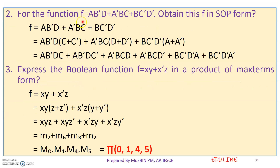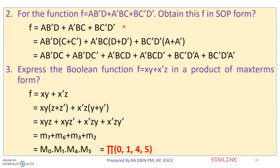We can multiply. The next question is: for the function, obtain f in canonical SOP form. If you have a question about this, we use the canonical SOP form. We will use all the variables. In the first term, there is a, b, d — c is missing. In total we use a, b, c, d — four variables.